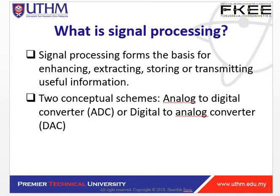In digital signal processing, it is concerned with the representation of signals by a sequence of numbers or symbols and the processing of these signals. The goal of digital signal processing is to measure the continuous real-world analog signal, then convert the signal from analog to digital using the ADC — the analog to digital converter. The required output signal is another analog output signal which needs the digital to analog converter, the DAC.